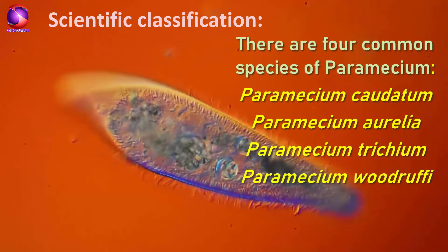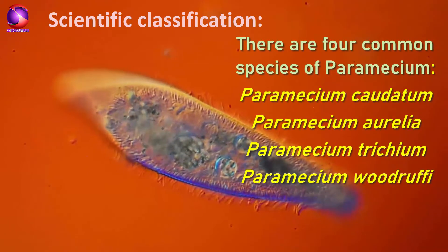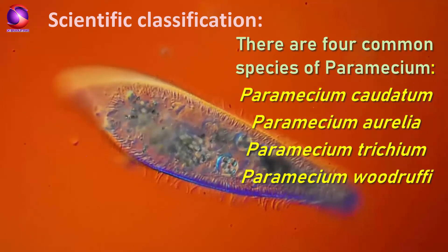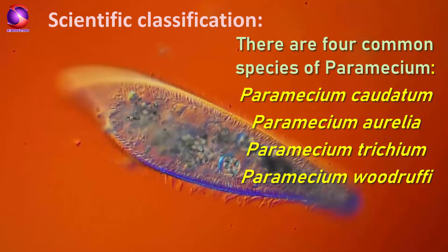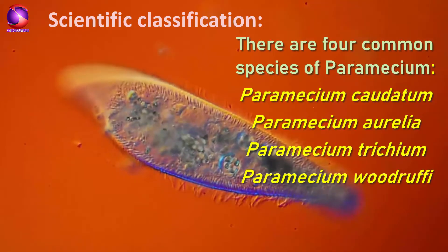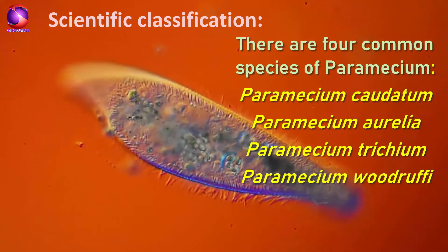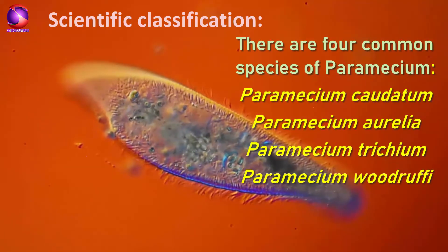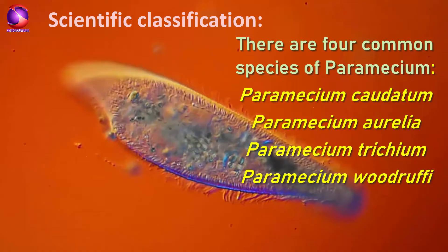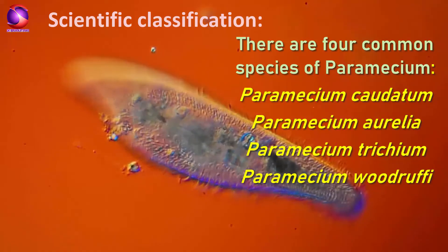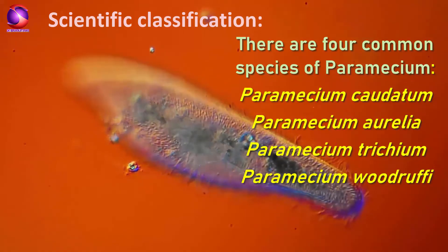There are four common species of Paramecium: Paramecium caudatum, Paramecium aurelia, Paramecium trichium, and Paramecium woodruffy.